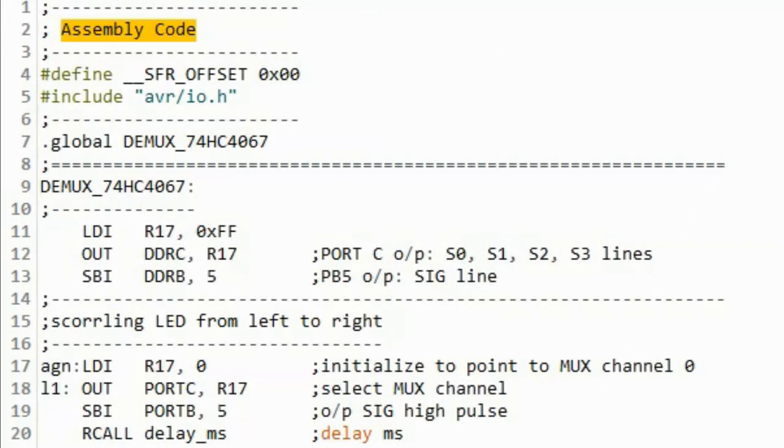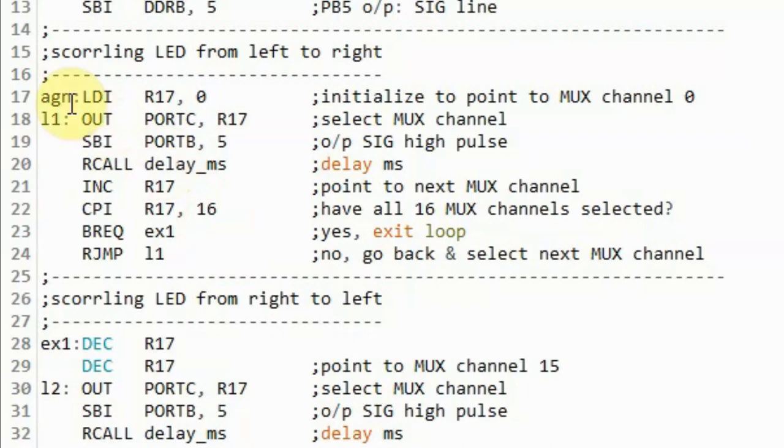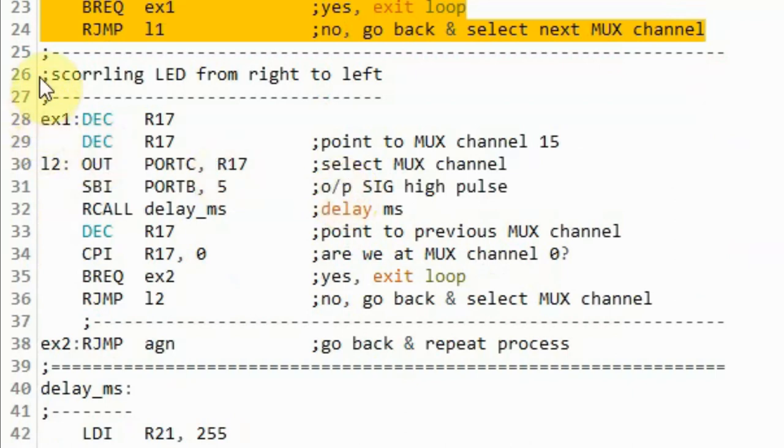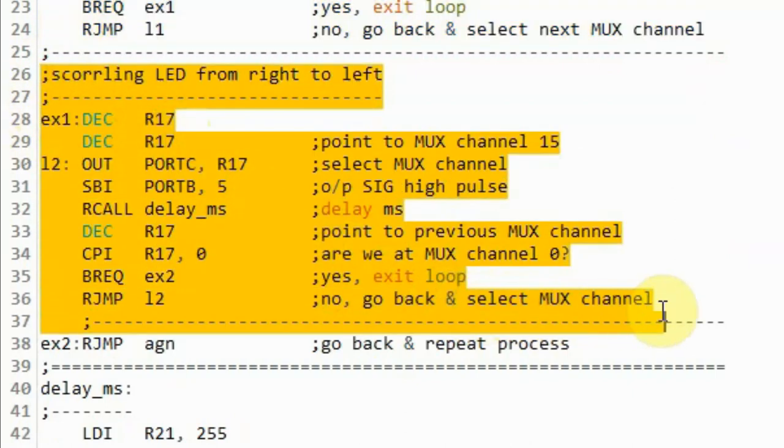In this next demonstration, the LED is scrolled back and forth to give the Knight Rider effect. This part of the code scrolls the LED from left to right, and this part scrolls the LED from right to left.